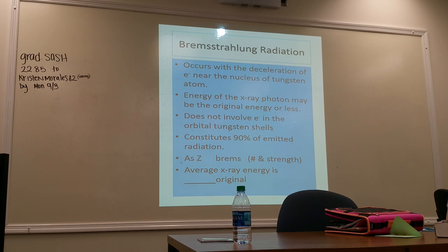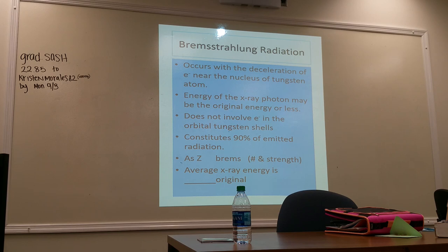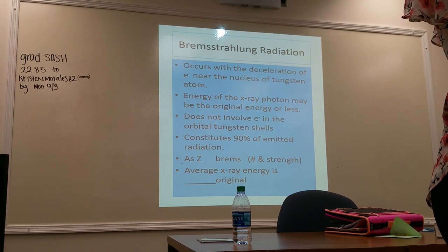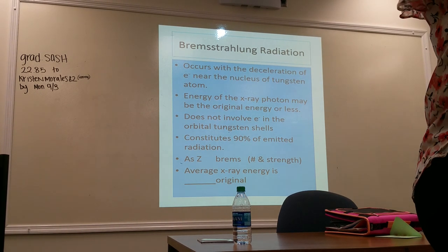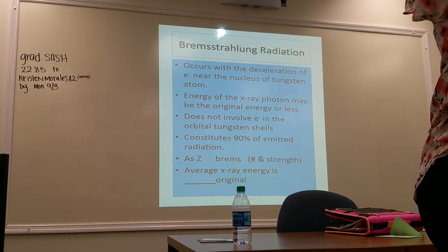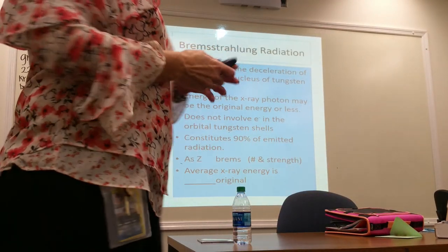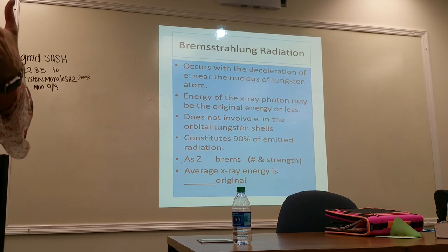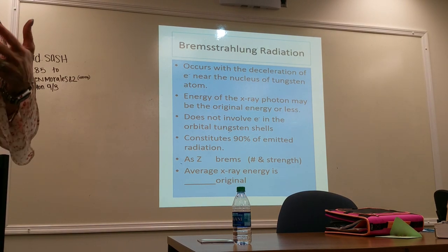The Z number is the atomic number. As the atomic number increases, the positive energy of the nucleus increases. More protons means stronger nuclear attraction, so electrons flying by are more attracted and more Brems radiation occurs. As atomic number increases, the number of Brems occurrences also increases.